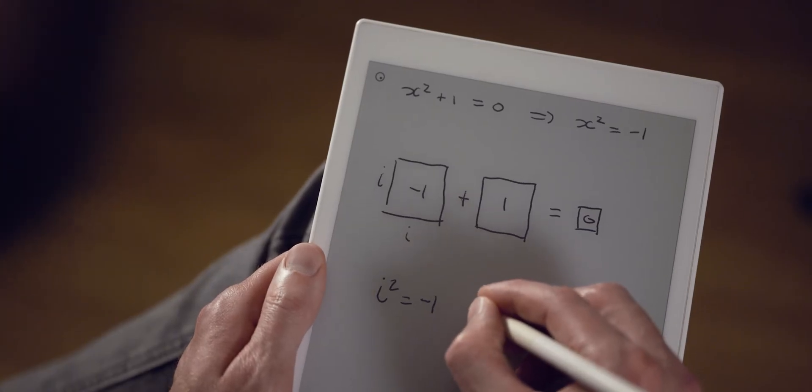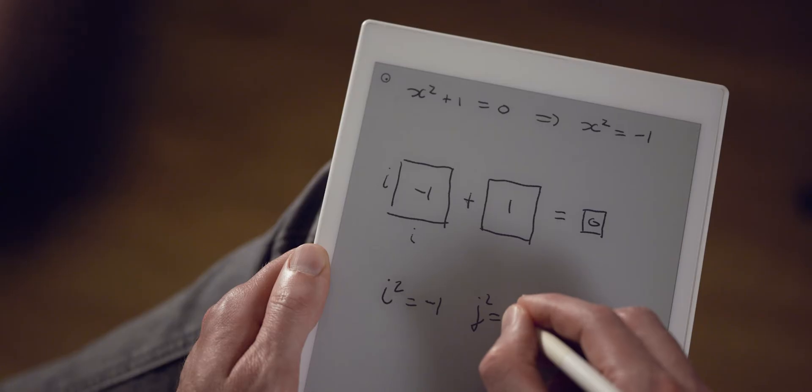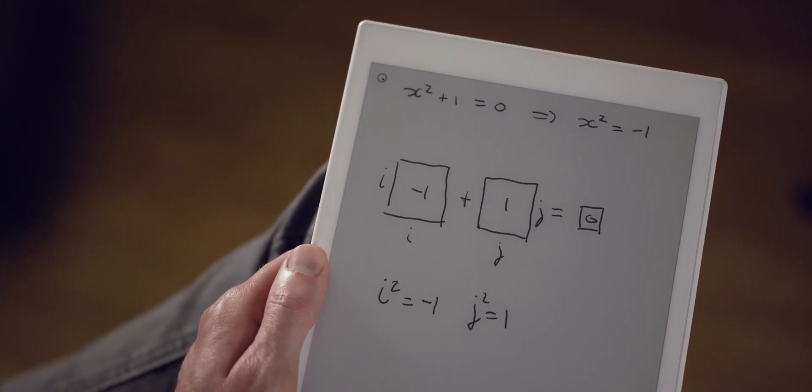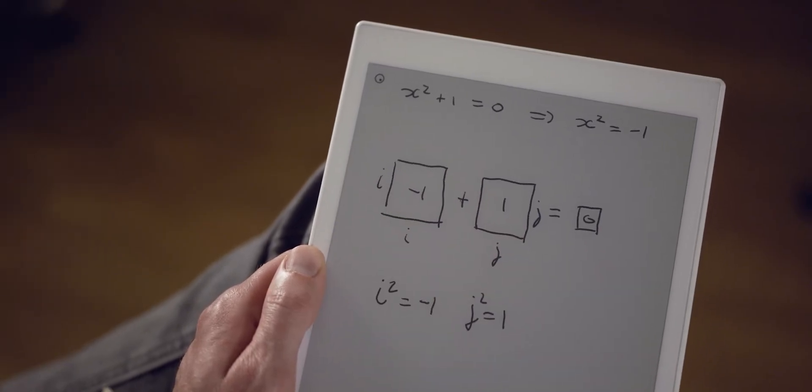What I can do is introduce a new number j such that j squared is equal to plus one. Then if I say that the sides of this square are j, we find that the equation has been satisfied.